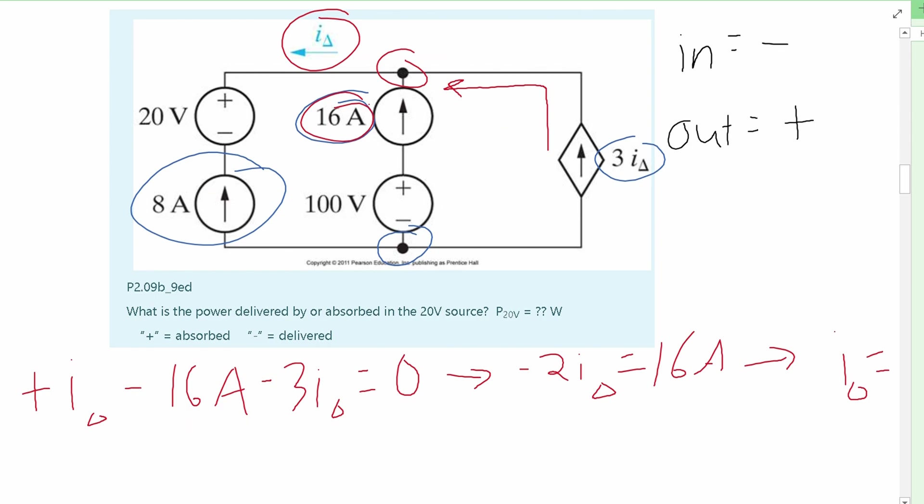We'll first look at the 8 amps part. This is going out, so this is going to be a positive 8 amps. Now we're going to look at our 16 amps. This is going out as well, so this is a positive 16 amps. Next, we're going to look at our 3 I delta, which is also going out. So this is a 3 I delta, and this all has to equal 0, because at the node it is equal to 0.